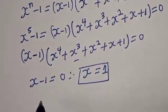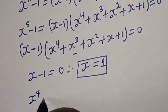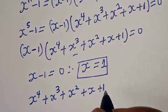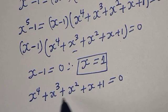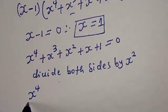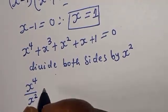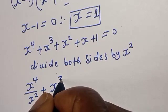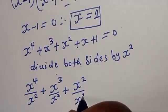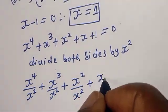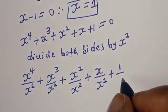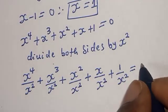Case 2: x raised to the power 4 plus x raised to the power 3 plus x squared plus x plus 1 is equal to 0. Since x is not equal to 0, let's divide through by x squared. We get x squared over x squared plus x cubed over x squared plus x squared over x squared plus x over x squared plus 1 over x squared, all equal to 0.